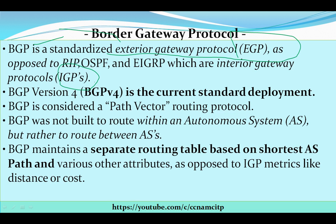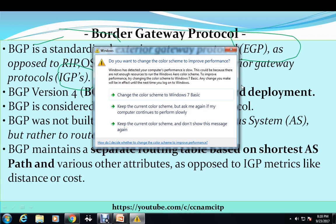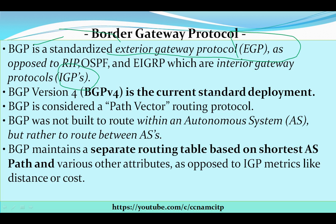The second thing about BGP is BGP version 4. BGP version 4 is the current standard deployment. The third characteristic is that BGP is considered a path vector routing protocol. This is very important to remember.